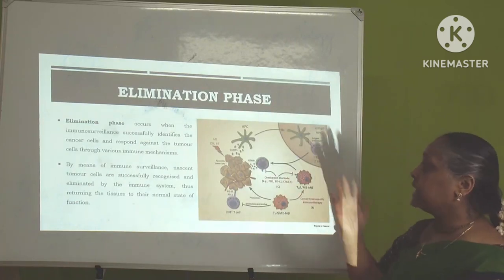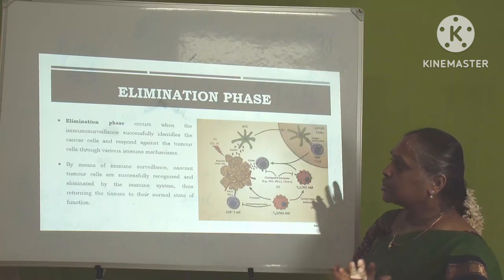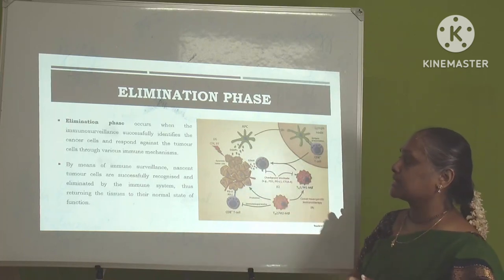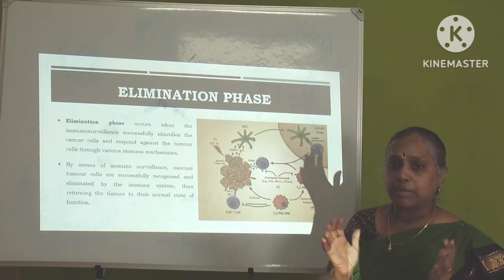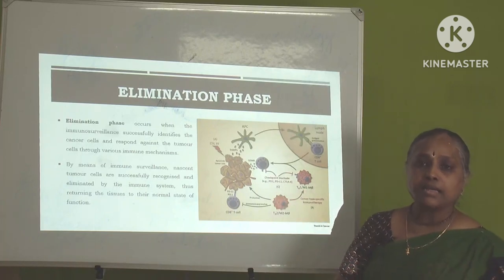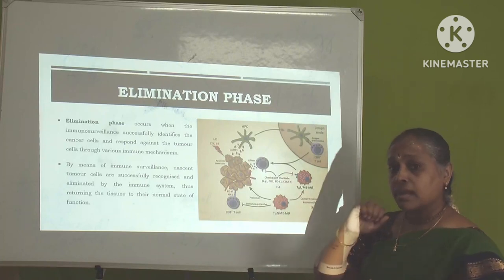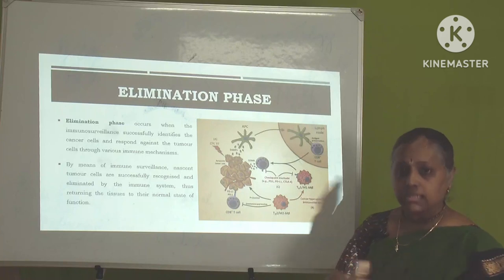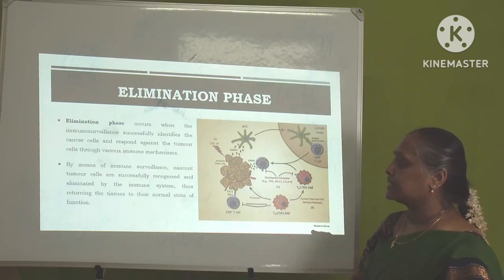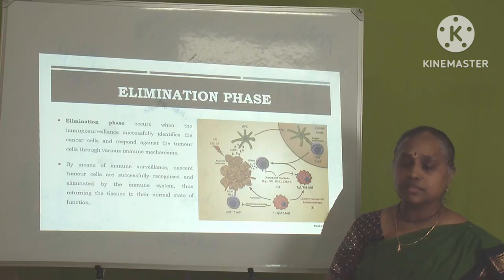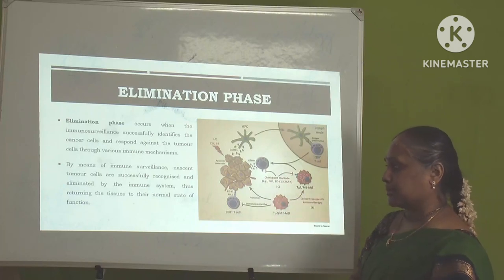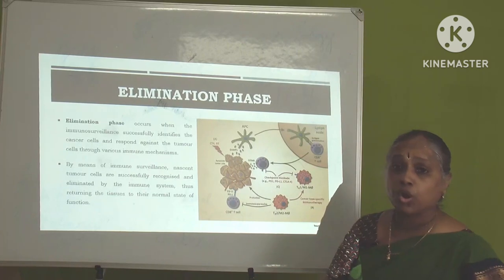In the elimination phase, when immune surveillance is successful and our immune system is strong, it will identify the cancer cells and through various immunological mechanisms — T cells, T cytotoxic cells, T helper cells, B cells, antibodies, interleukins, and cytokines — it starts attacking and killing the cancer cells. By means of immune surveillance, the nascent tumor cells — that is, tumor cells at the initial stage — are successfully recognized and eliminated by the immune system, returning the tissues to their normal state of function.